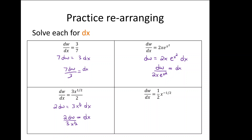The bottom-right example has one more step. Before cross multiplying, I want to rewrite x to the negative one-half as x to the positive one-half in the denominator. So the negative one-half power on top turns into a positive one-half power in the bottom. Now cross multiplying: 2x to the one-half times dw equals dx. In each case the dx has been isolated.